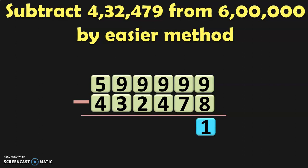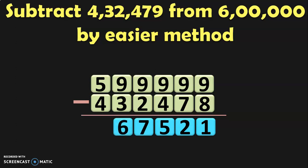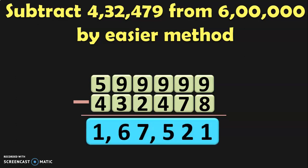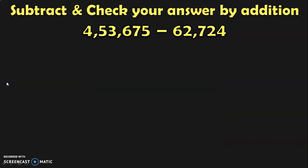Now begin the subtraction from the ones place. 9 minus 8 is 1. 9 minus 7 in the tens place is 2. Next, 9 minus 4 is 5. 9 minus 2 is 7. 9 minus 3 is 6. And 5 minus 4 is 1. So you can see how easily we have done the subtraction and the answer is 1,67,521.